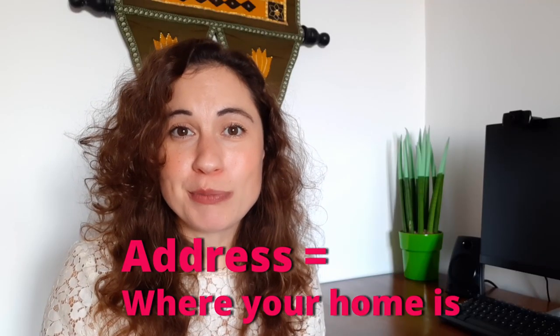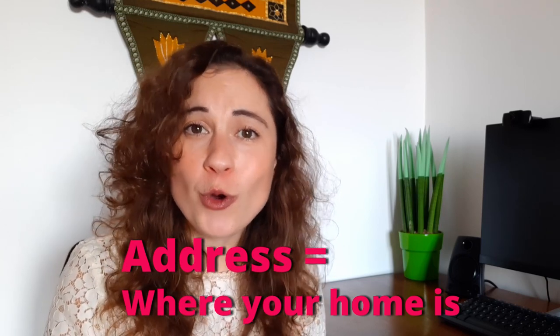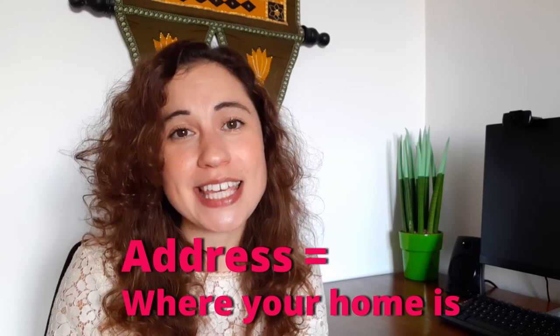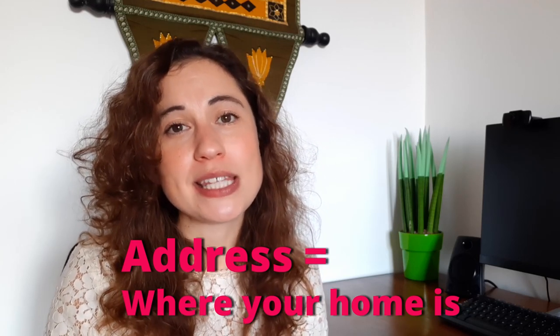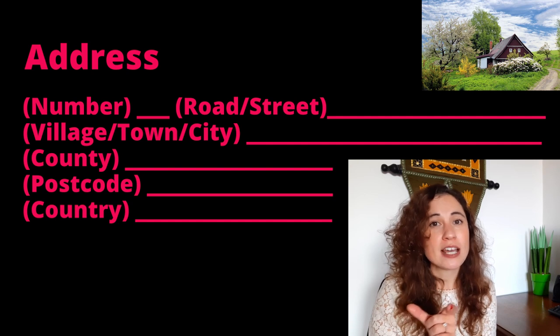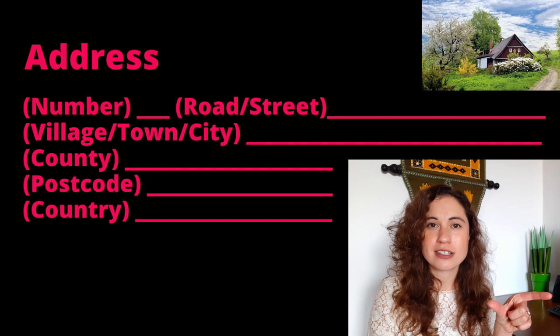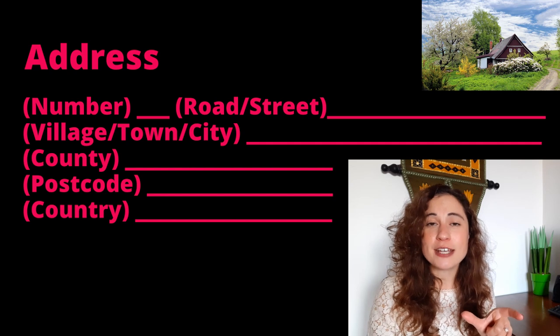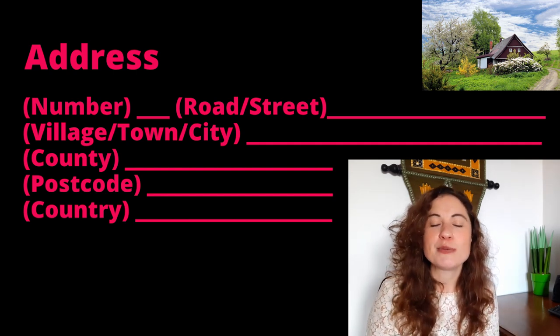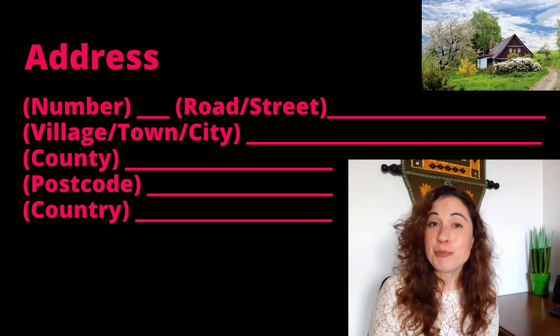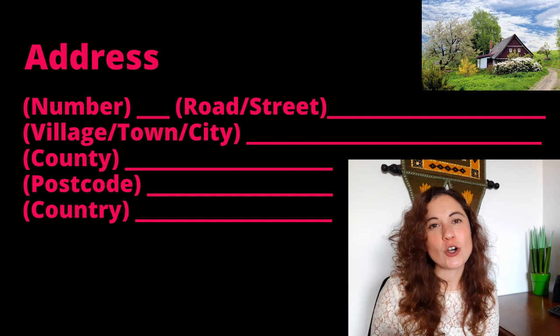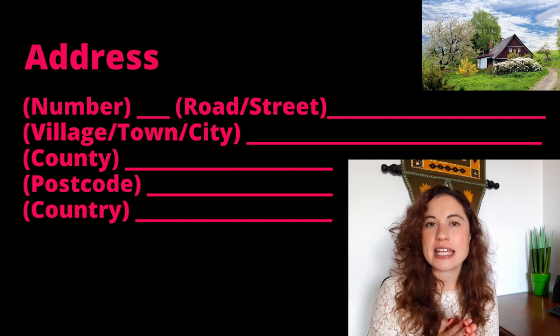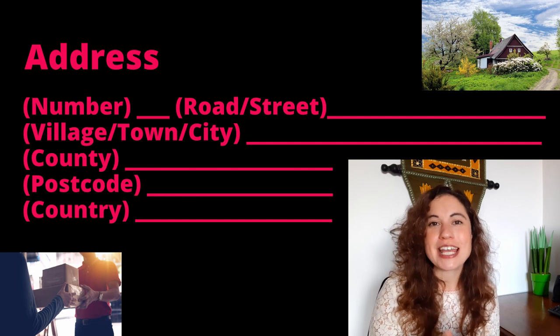Your address will be the details of where you have your home or where you live most of the year. In English we would begin with the number of your house or flat, followed by the name of your street. We would also include the town or city, the county — which is the general area in which you live — and a postcode. The postcode is a combination of letters and numbers that indicate where the postman can find your home.